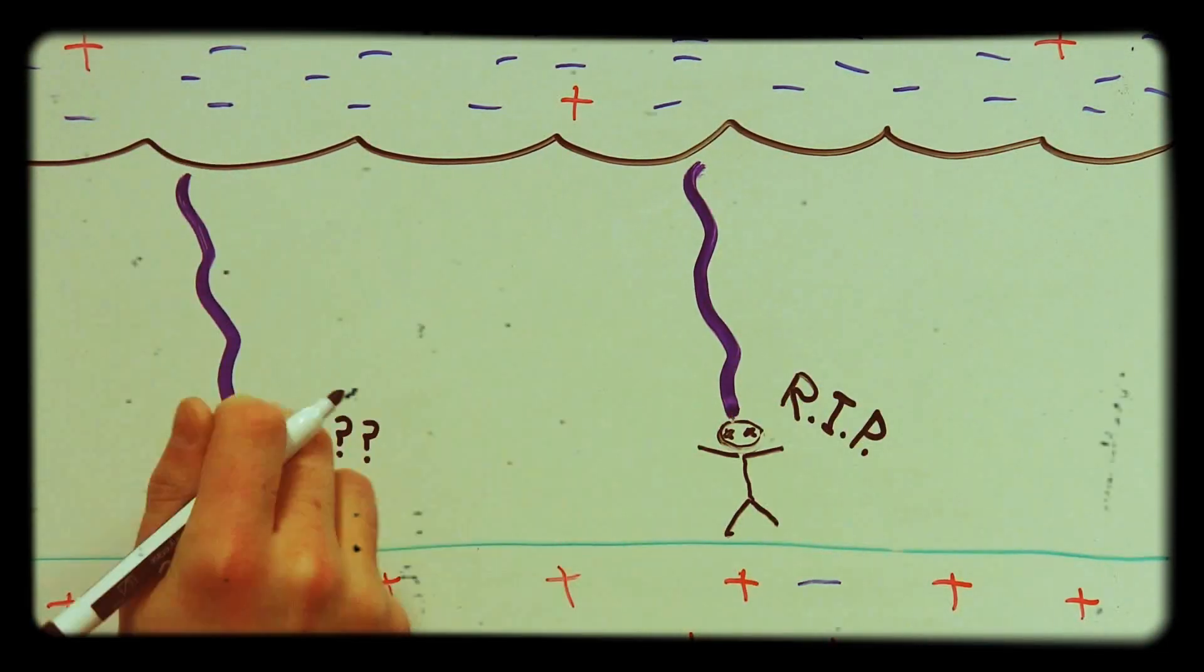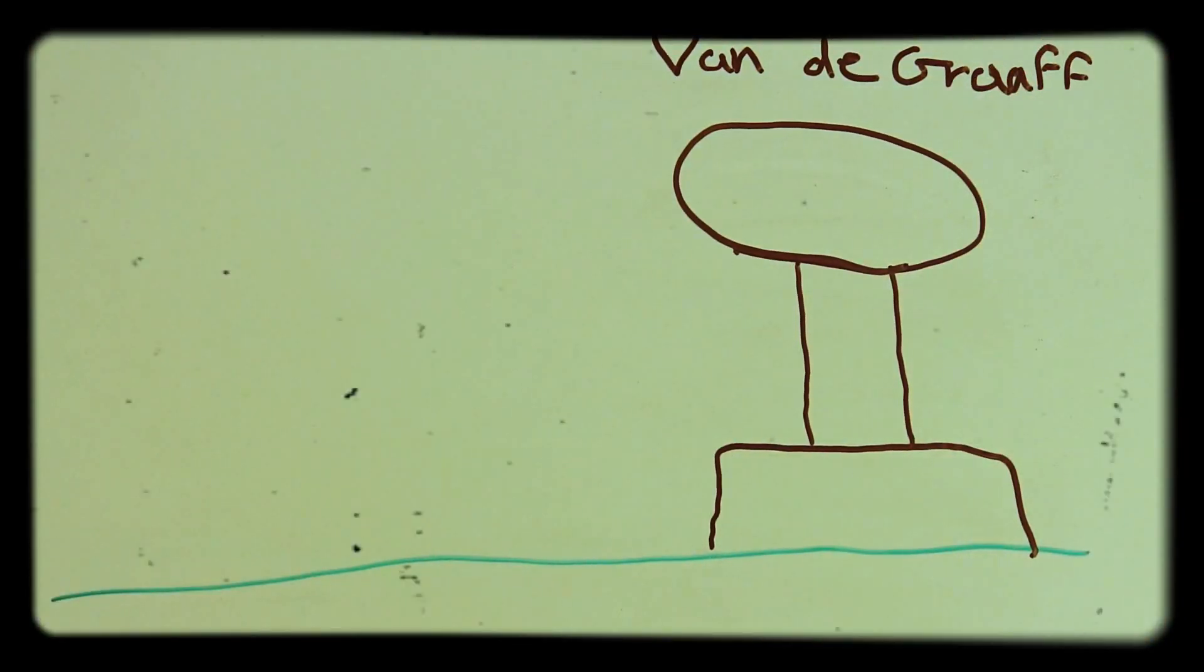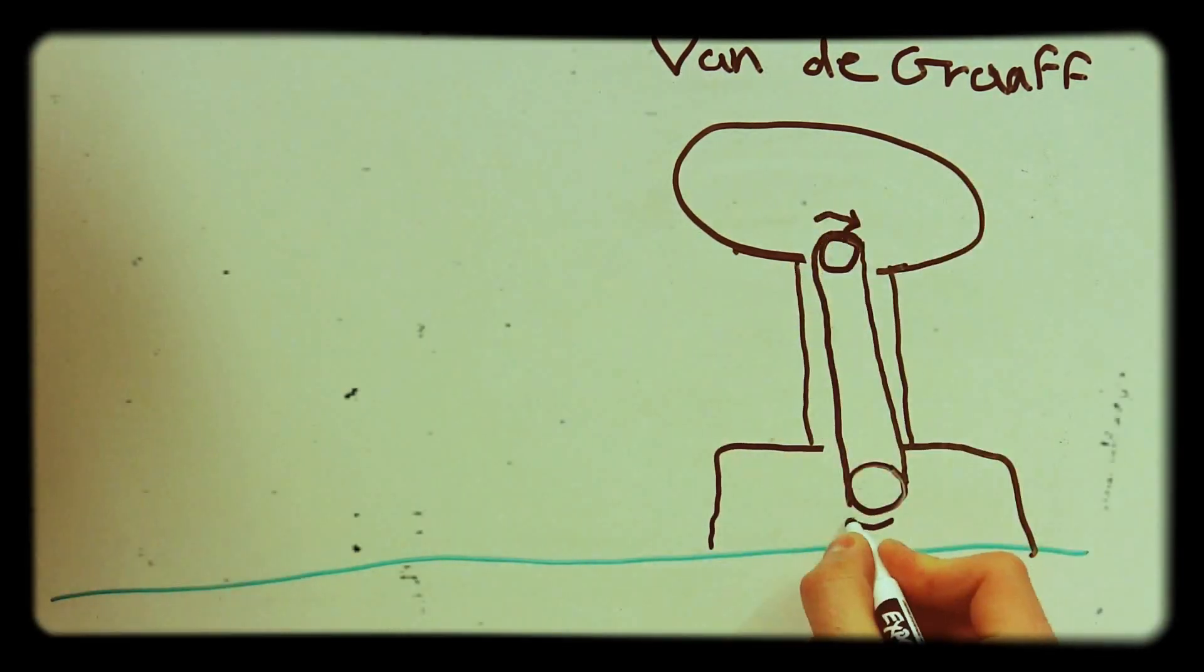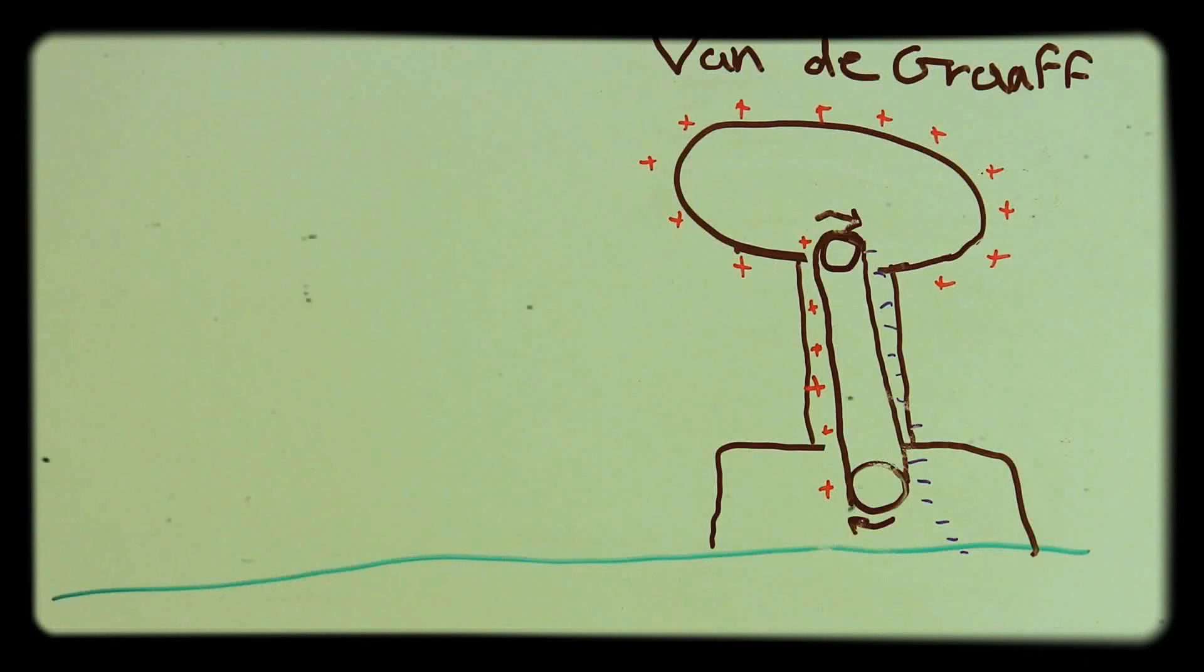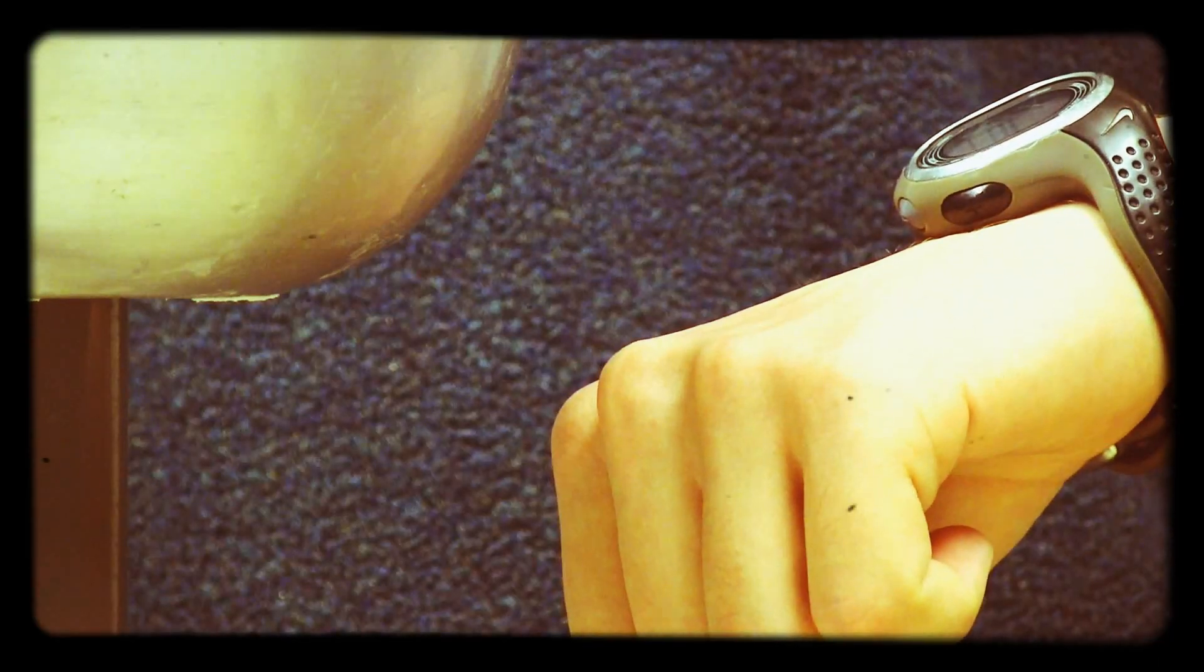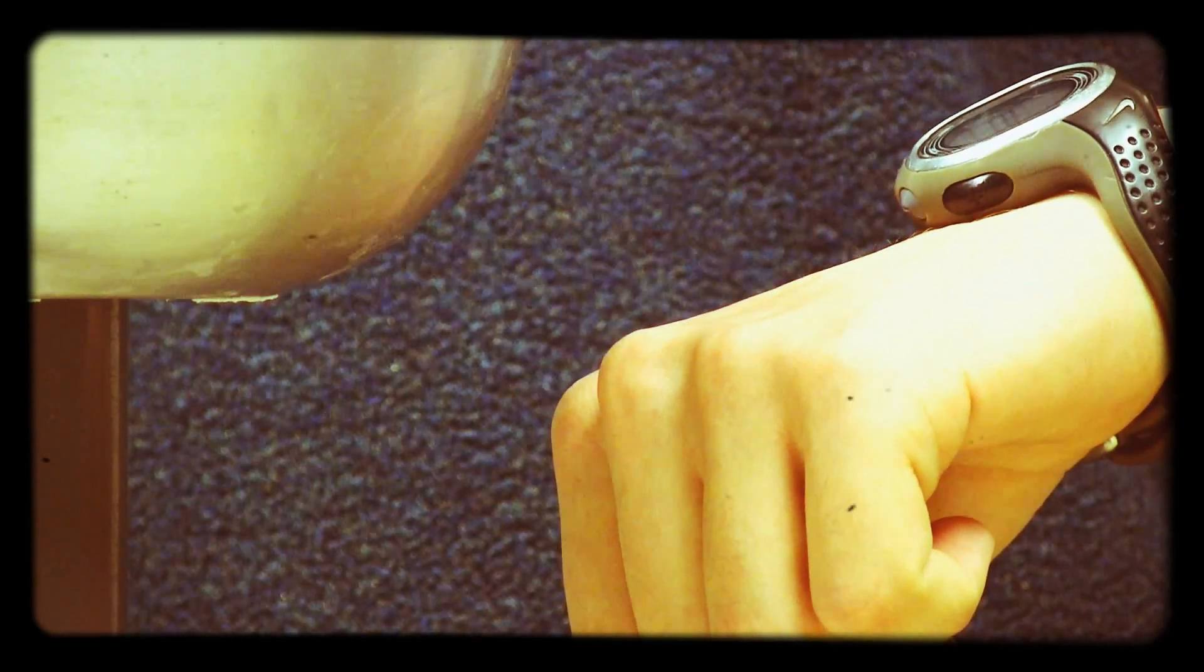But what happens if you're in a car? We can make our own lightning to test this using the triboelectric effect we talked about. A Van de Graaff generator uses rubbing between internal parts to charge the large metal ball at the top. Once enough charge builds up, it jumps and hits a nearby surface, just like lightning, but smaller.